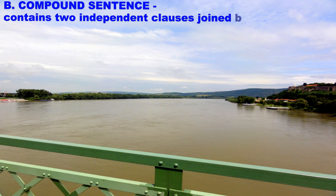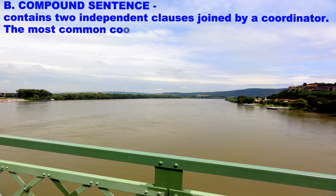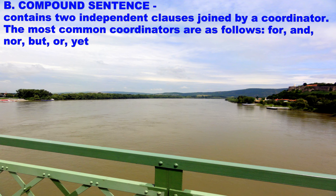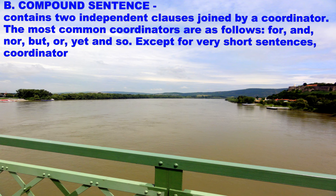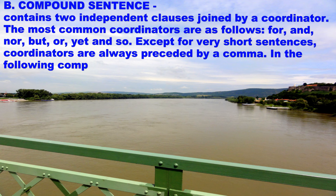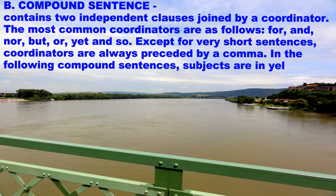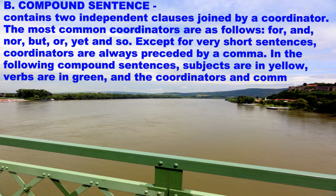Now, let's take a look at a compound sentence. A compound sentence contains two independent clauses joined by a coordinator. The most common coordinators are: for, and, nor, but, or, yet, and so. Except for very short sentences, coordinators are always preceded by a comma. In the following compound sentences, subjects are in yellow, verbs are in green, and the coordinators and the commas that precede them are in red.